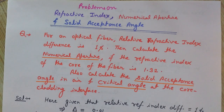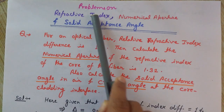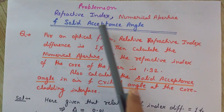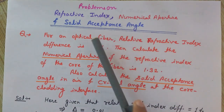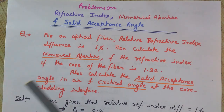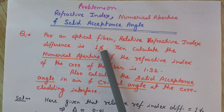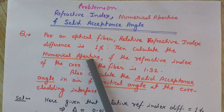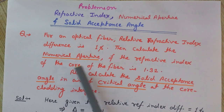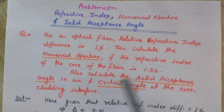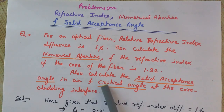Hi, welcome back to Engineering Made Easy. This is Lalith. Today we will discuss problems on refractive index, numerical aperture, and solid acceptance angle. The problem involves all these parameters. For an optical fiber, the relative refractive index difference is 1%. We need to calculate the numerical aperture, given that the refractive index of the core is 1.32, the solid acceptance angle in air, and the critical angle at the core-cladding interface.